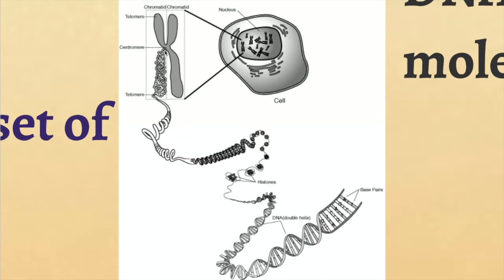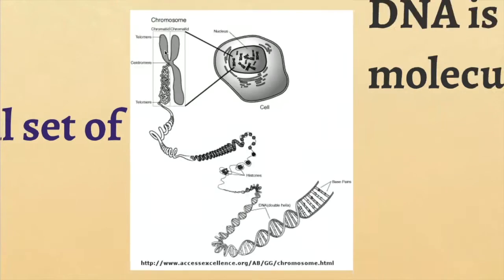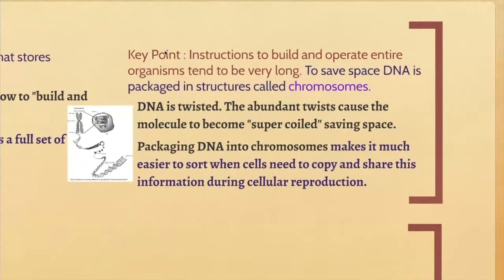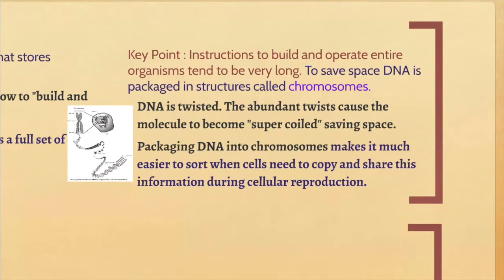You can think of it like a telephone cord. If you pick up your telephone too many times and the phone cord gets twisted, it twists on itself. By packaging your DNA into chromosomes, it makes it easier for your cells to sort the DNA when it's time to make new cells and share that DNA with those new cells — instead of having a four-foot strand of DNA to deal with.